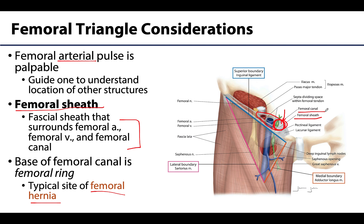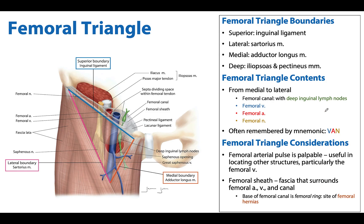The herniation can compress the other contents of the femoral canal. This is a small but important area of the anterior superior limb — please take time to review the boundaries and contents, and reach out if you have any questions. Thank you for your time and attention.